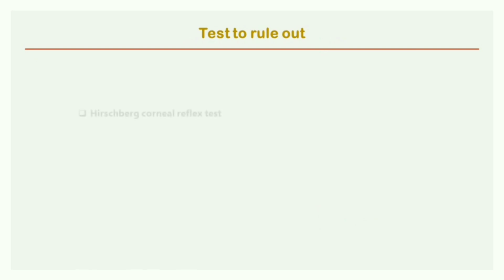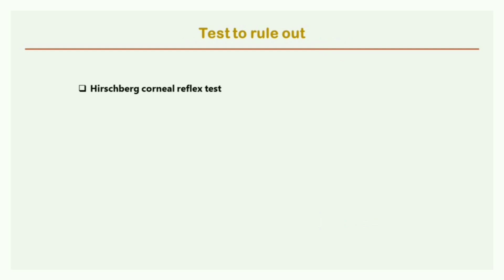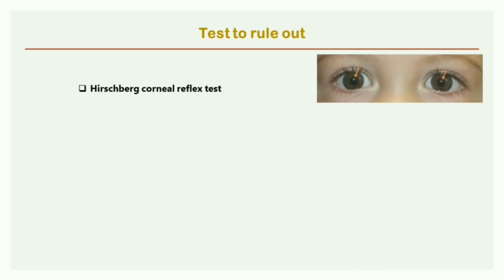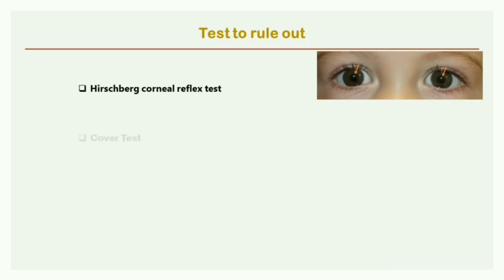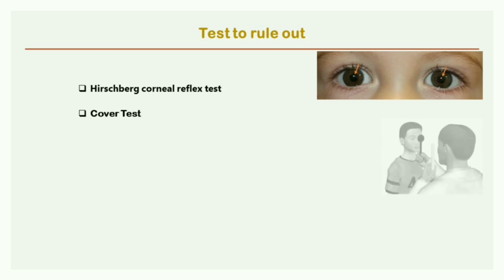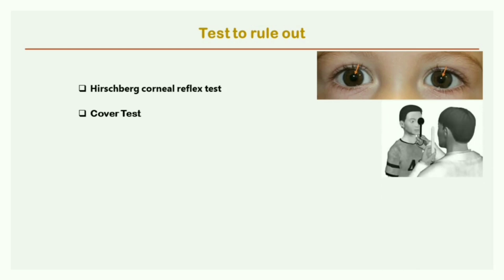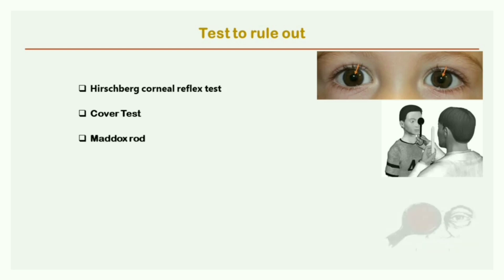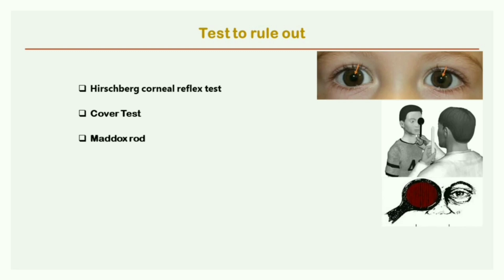The tests used to diagnose strabismus: first is the Hirschberg corneal reflex test, which uses a torchlight to assess whether the person has strabismus. Second is the cover test, an objective test which can determine the direction and magnitude of tropia and phoria. Third is the Maddox rod test, which is used to subjectively detect and measure the deviation of strabismus.